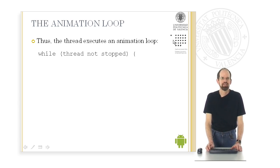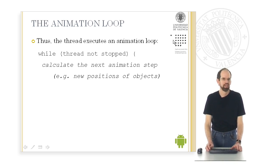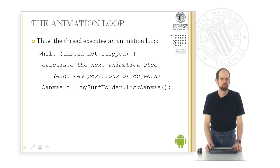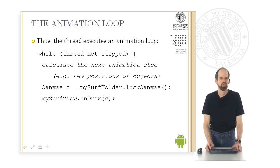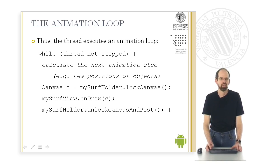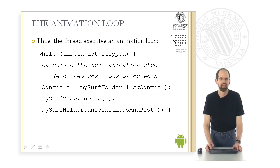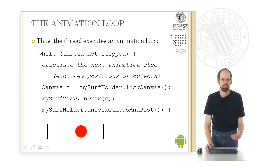The thread executes a loop. While it does not stop, the thread calculates the next step of the animation — for example, the new positions of the objects. Then it gets the canvas to draw upon by calling surfaceHolder.lockCanvas. Then it calls onDraw with this canvas as a parameter. Afterwards it calls unlockCanvasAndPost to display the next step of the animation. This loop causes moving and animated graphics on the screen.